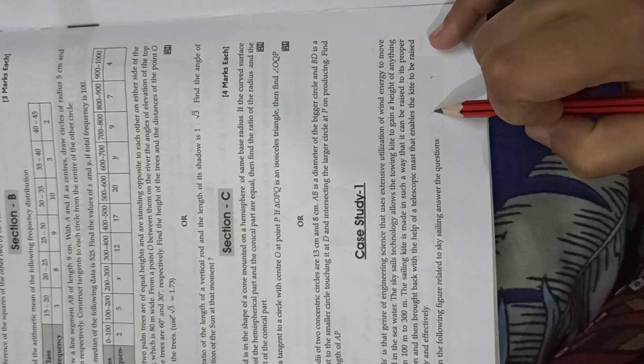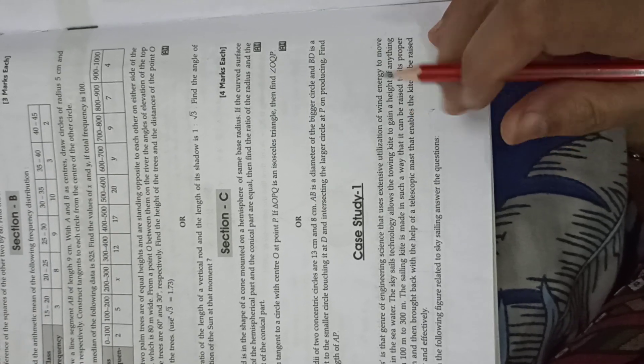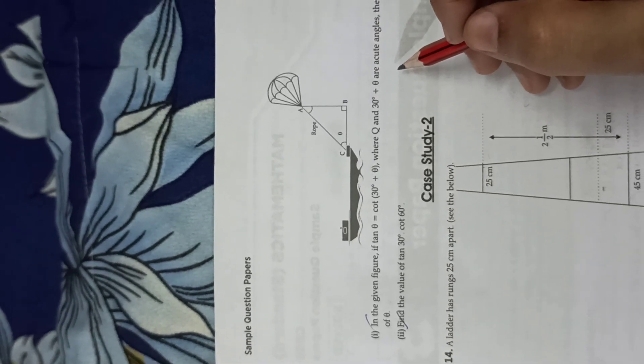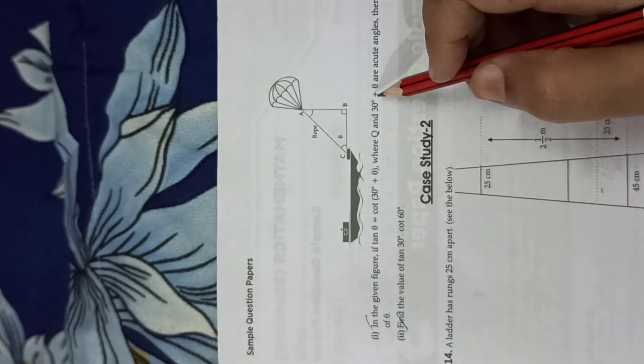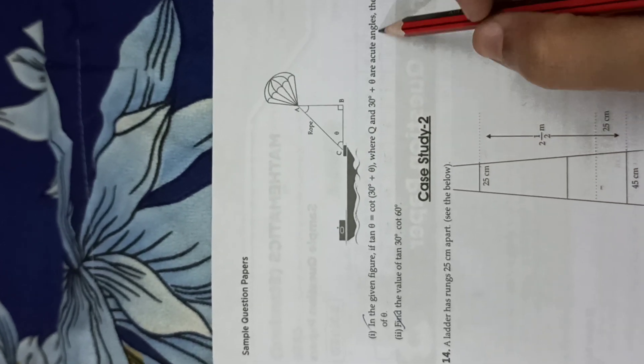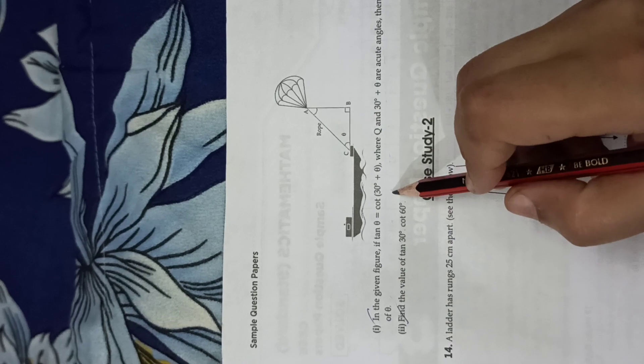Based on the following figure, let's do sky sailing and answer the questions. Here we have this figure. In the given figure, tan theta equals cot 30 plus theta, where theta and 30 plus theta are acute angles. Then find the value of theta.